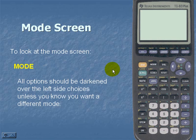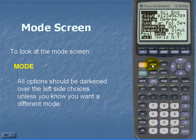Next let's look at the mode screen. To look at the mode screen, simply hit MODE. All options should be darkened over to the left side choices unless you want a different mode. In order to accomplish that, let's scroll down to our row and then simply hit enter.